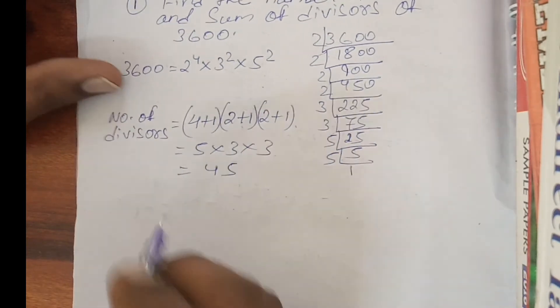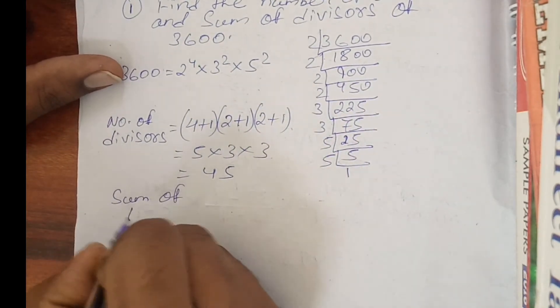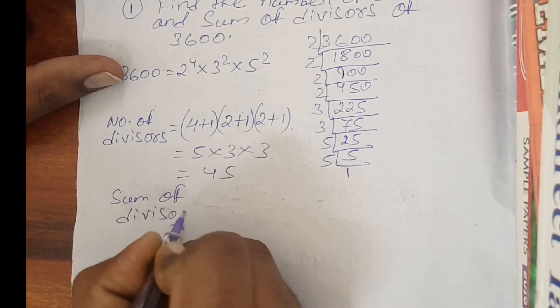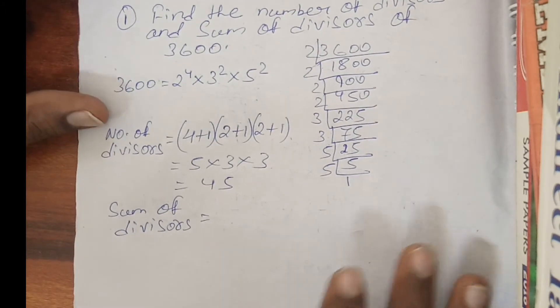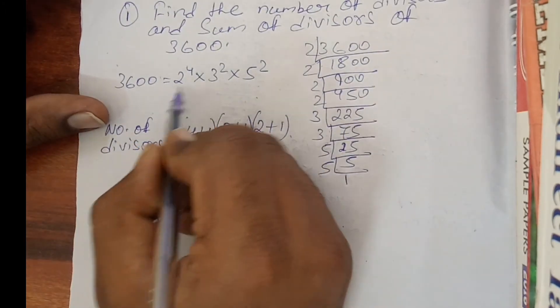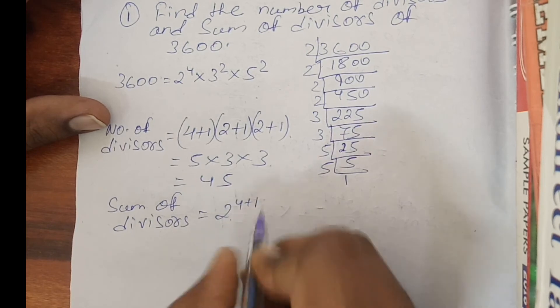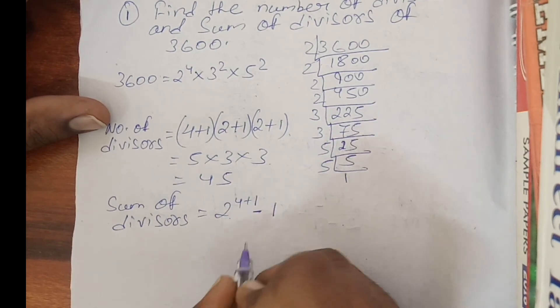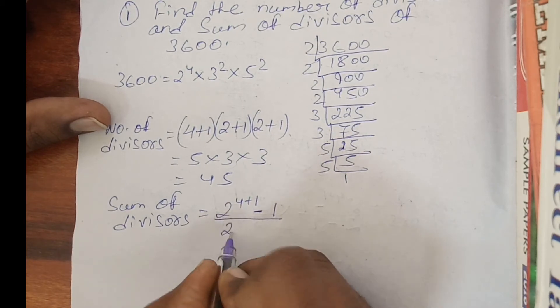Now sum of divisors. The formula for sum of divisors is: take the first number with power, add plus 1 in the power, and minus 1 from the number, whole divided by take this number 2 and subtract with 1.